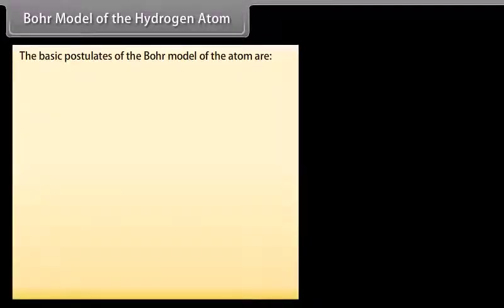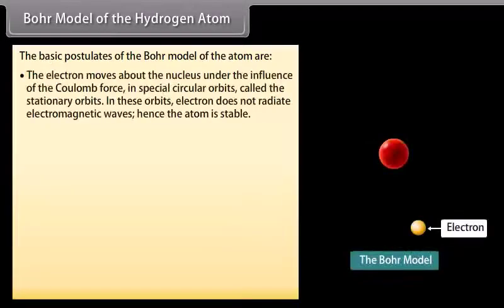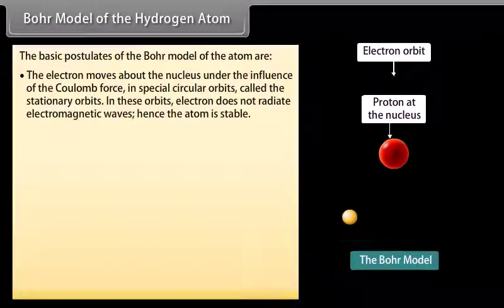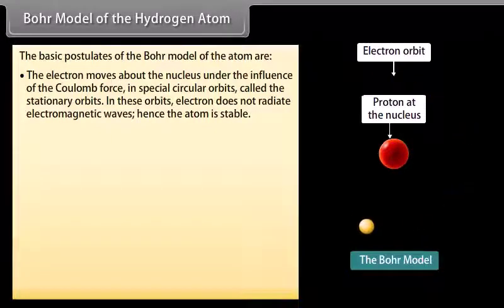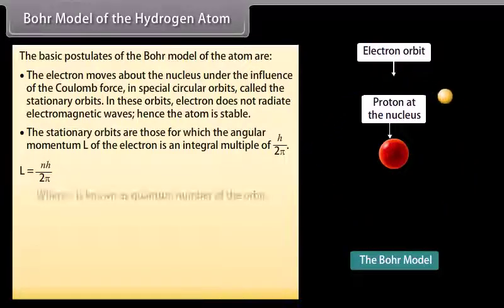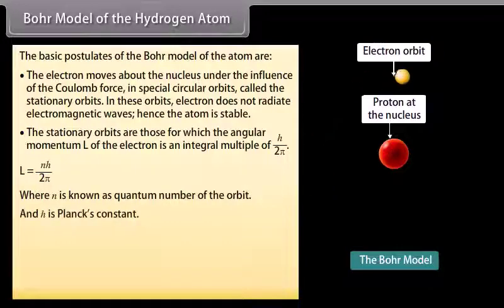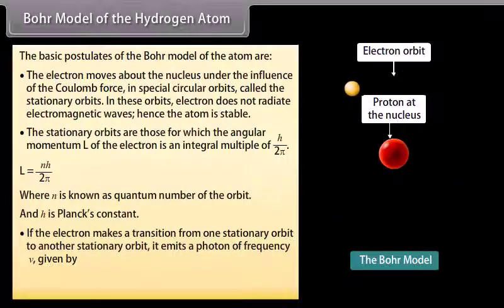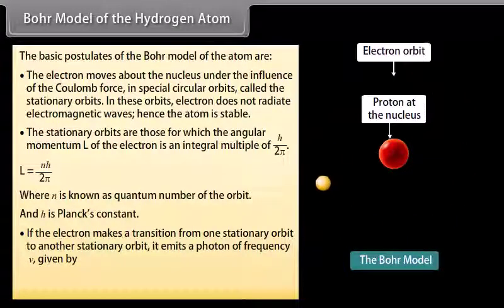The basic postulates of Bohr's model of the atom are: the electron moves about the nucleus under the influence of the Coulomb force in special circular orbits called stationary orbits; in these orbits the electron does not radiate electromagnetic waves, hence the atom is stable; the stationary orbits are those for which the angular momentum L equals nh/2π, where n is the quantum number of the orbit and h is Planck's constant; and if the electron makes a transition from one stationary orbit to another, it emits a photon of frequency ν = (Eᵢ − E_f)/h.